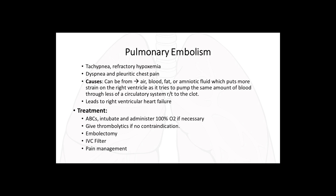This leads to right ventricular heart failure. Treatment for pulmonary embolism involves remembering ABCs — airway, breathing, and circulation. Intubate the patient if necessary and administer 100% oxygen. Give thrombolytics if there is no contraindication, and an embolectomy can also be performed. An IVC filter can be placed, which will not help the current embolism but will reduce future ones. Pain management is important because a patient with increased pain uses more oxygen, so managing pain and decreasing anxiety is essential.